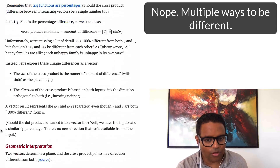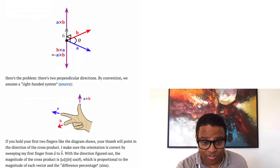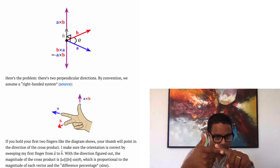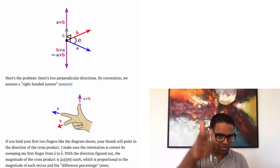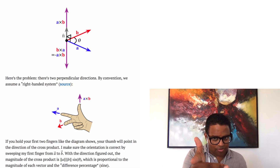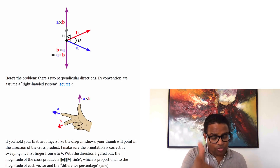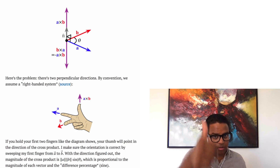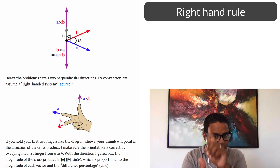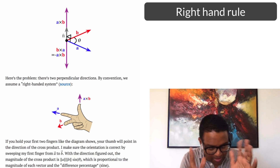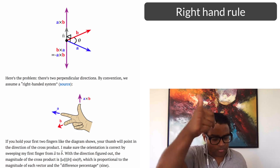What happens with the cross product is we use a convention called the right-hand rule. You have A on your first finger, B on your second finger, and the cross product is your thumb — kind of sweeping your finger. The only reason we do this is to decide which direction is up. So A cross B is a new direction, and it's positive in this direction. If the cross product is negative, it would be down.